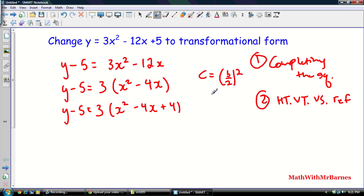So negative 4, I'll actually write that out, just so you can see. So negative 4 divided by 2, squared, so negative 4 divided by 2 is negative 2, squared is 4. So that's my C value here that I add in.